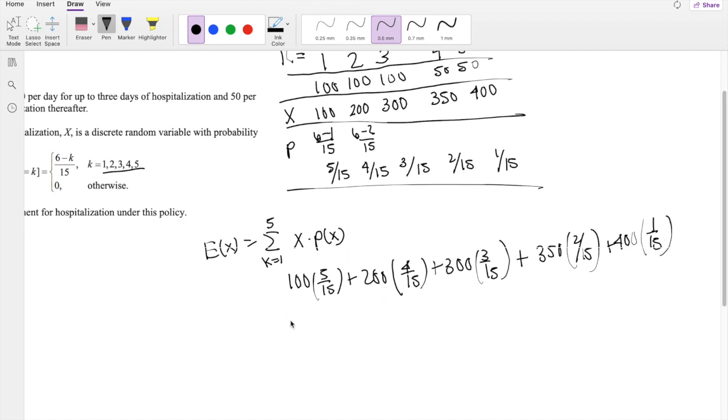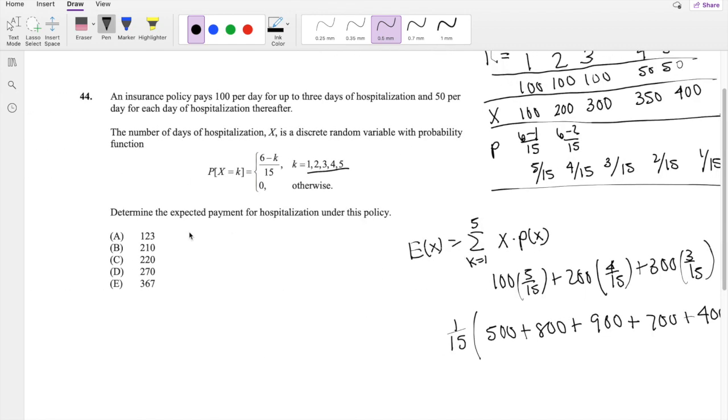If you're doing this on an exam, I recommend you just factor out the 1/15 first and just add up these values here. So like 500 plus 4 times 2 is 800, because on the exam, time management is key. If you can save these little steps instead of having over 15 for each of them, that's great. So then 350 times 2 is 700, plus 400, equals 220, which is our answer C.